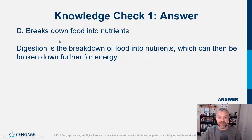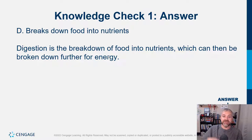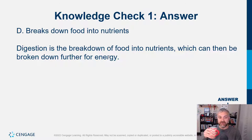True digestion is breaking down food into nutrients — it happens in way more places than just the stomach and small intestine. Digestion is the breakdown of food into nutrients, which can then be broken down further for energy.